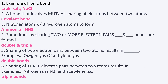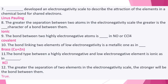I hope I'm able to help you review for your TEAS exam. Number seven: blank developed an electronegativity scale to describe the attraction of the elements in a chemical bond for shared electrons. The answer is Linus Pauling. Linus Pauling developed an electronegativity scale to describe the attraction of the elements in a chemical bond for shared electrons. I will be posting the link to the Quizlet review guide below so you can study the full chemistry review as well.